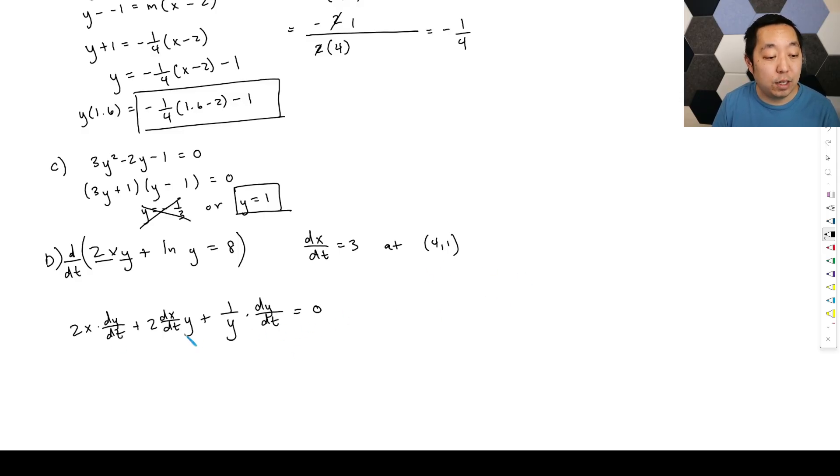And now we just plug in values. Honestly, I don't solve for dy dt at this point. I just plug in values because that would just make it numerically simpler. So the x is four, dx dt is three, y is one, that's the y point.